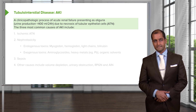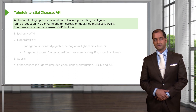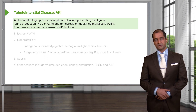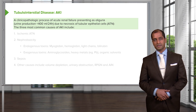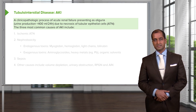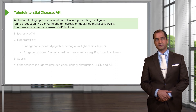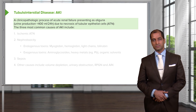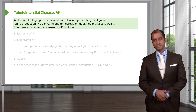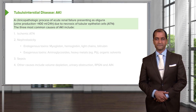We call this acute kidney injury. Keep this separate from RPGN and from chronic renal failure, which we'll discuss later. The clinical pathologic process of acute renal failure presents with oliguria — you must know that oliguria refers to less than 400 milliliters of urine being produced in a day. One of the most common causes of acute kidney injury is acute tubular necrosis. Necrosis means that the tissue is not receiving oxygen, so one of the most common causes of ATN is ischemia.